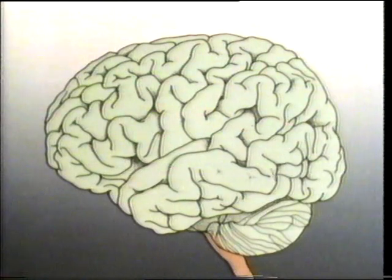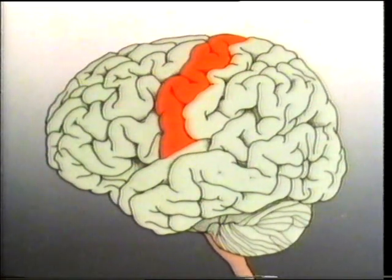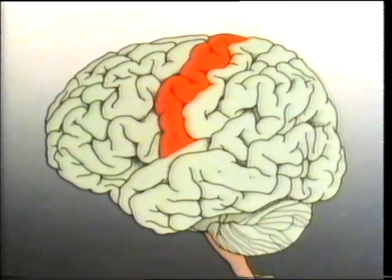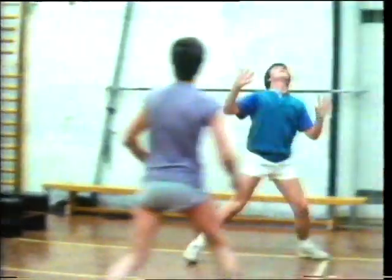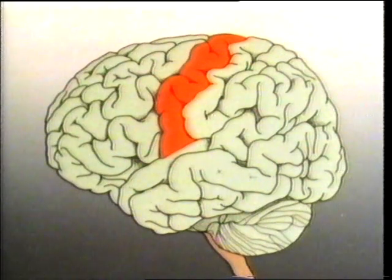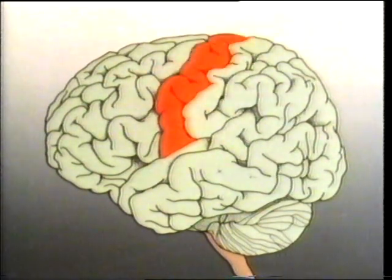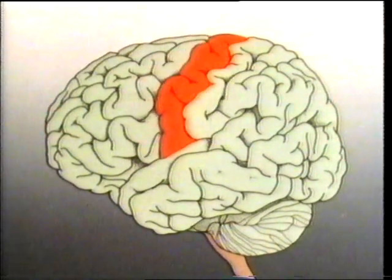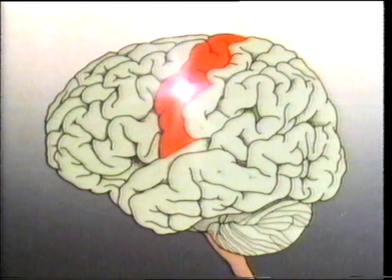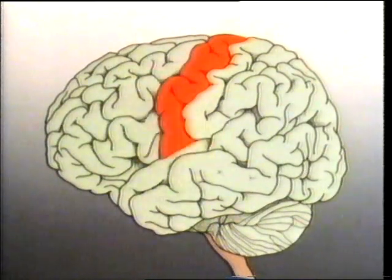We know that different areas of the cerebrum do different jobs. This is the motor area, which controls many of our movements — parts of this area are in action whenever we make any movements, large or small. Different portions of the motor area control different parts of the body: the top controls movement of the abdomen; from here, messages are sent to the thorax, the arms, the hands, the fingers, the thumb, the neck; and from here at the bottom, signals go out to the muscles of the tongue.